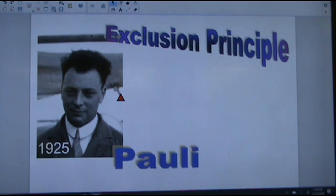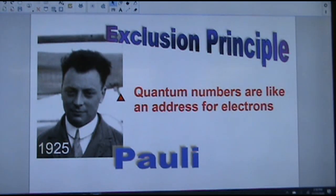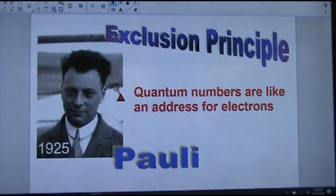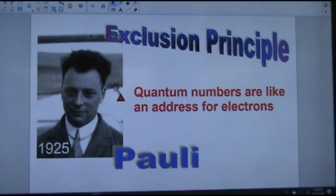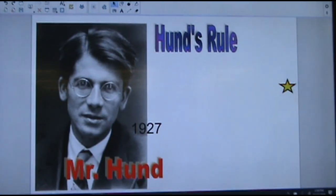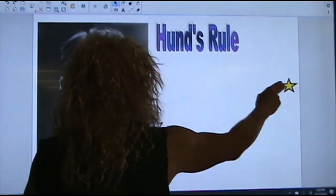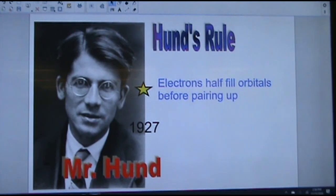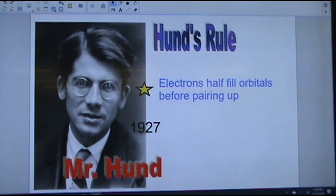Wolfgang Pauli was another German scientist who came up with the Pauli exclusion principle, which makes use of the work that Schrödinger did. It tells us that the quantum numbers of the electron are like an address for the electron — no two electrons can have the exact same four quantum numbers because that would put them in the same place at the same time with the same energy, and that's just not possible. Frederick Hund came up with Hund's Rule, which tells us that electrons will half-fill orbitals before they start pairing up with each other.